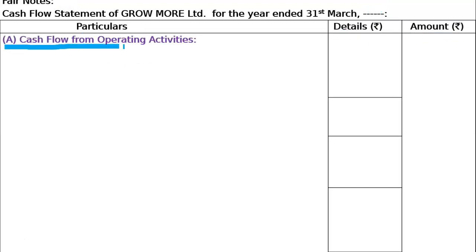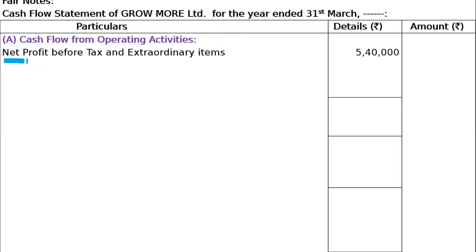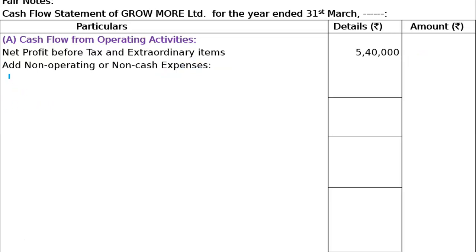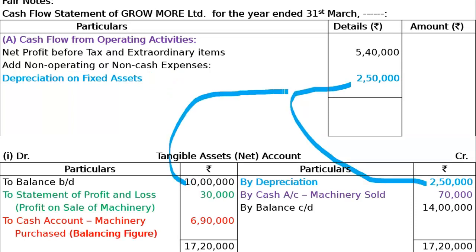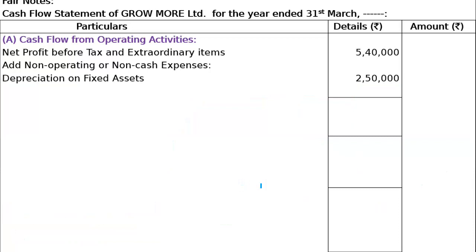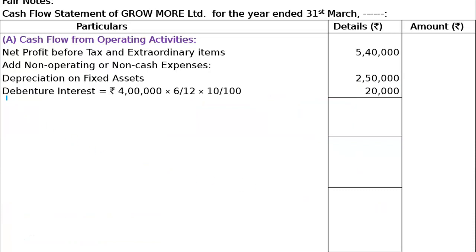A: Cash Flow from Operating Activities. In Cash Flow from Operating Activities, from the last page, net profit before tax and extraordinary items 5,04,000 will be written. Add non-operating and non-cash expenses. Add non-fixed assets - let me show where it came from. 25% depreciation as given in adjustments. Then debenture interest - you need to read the question carefully.